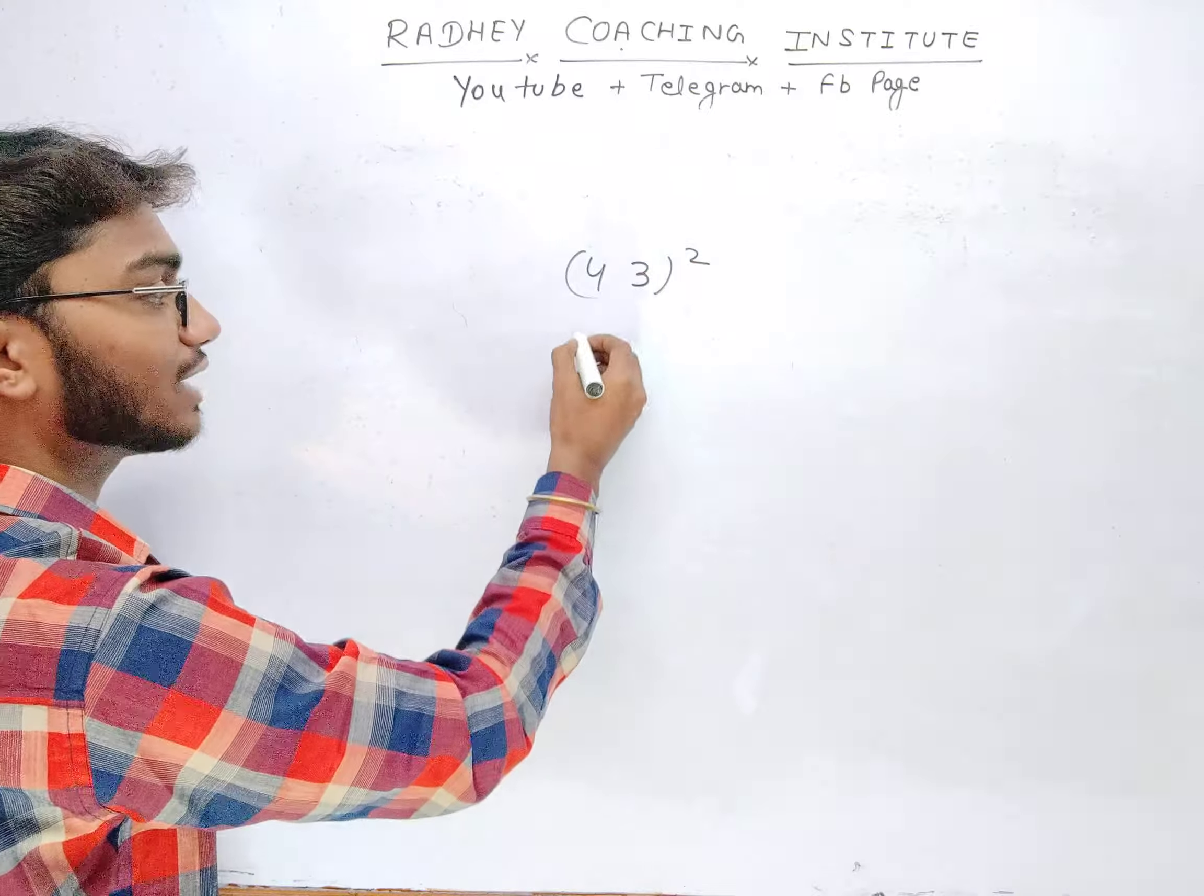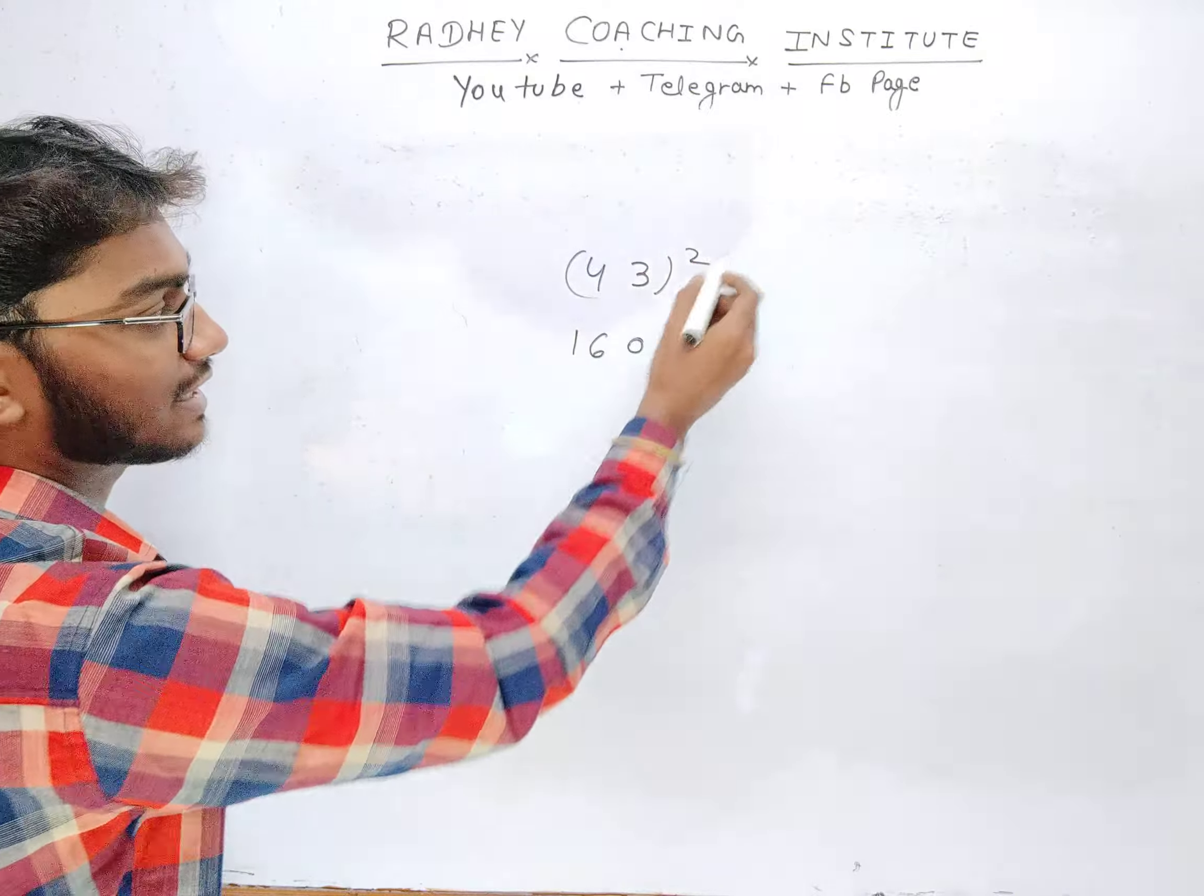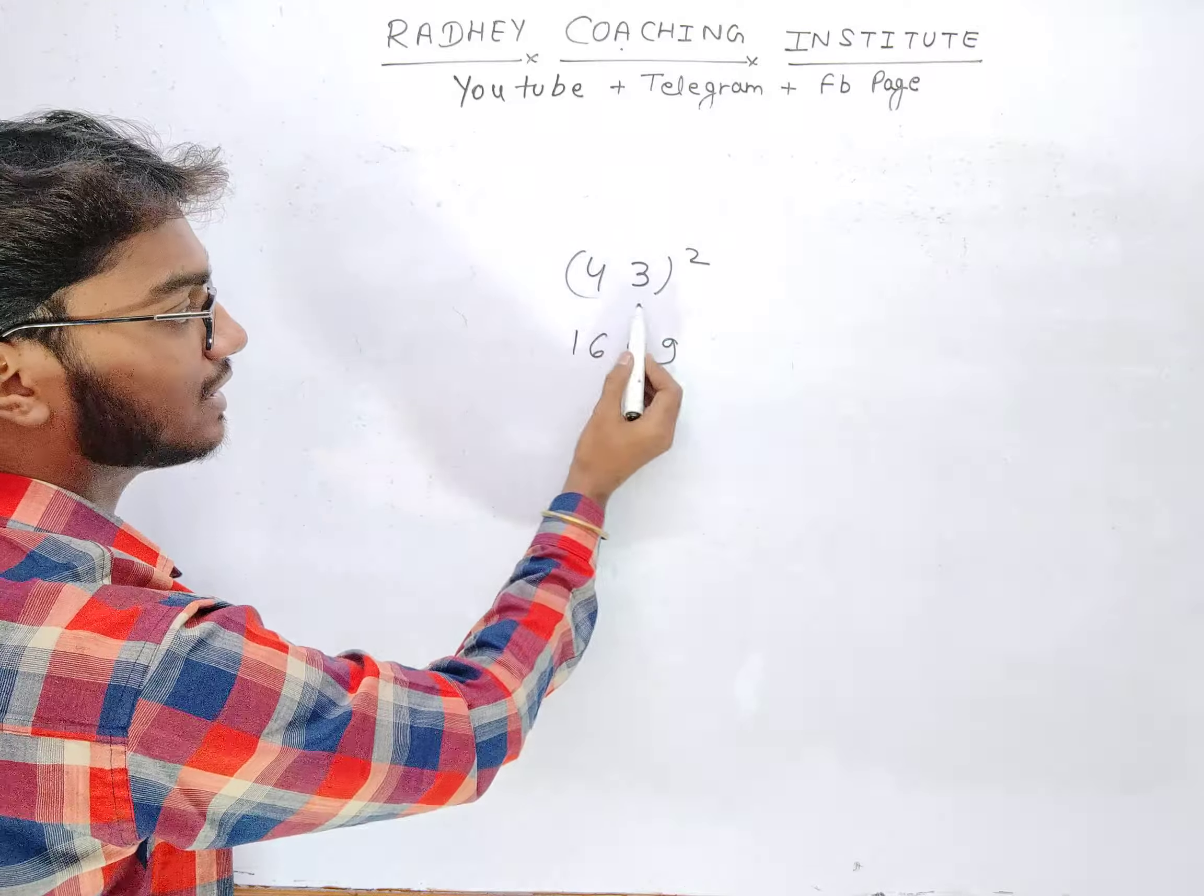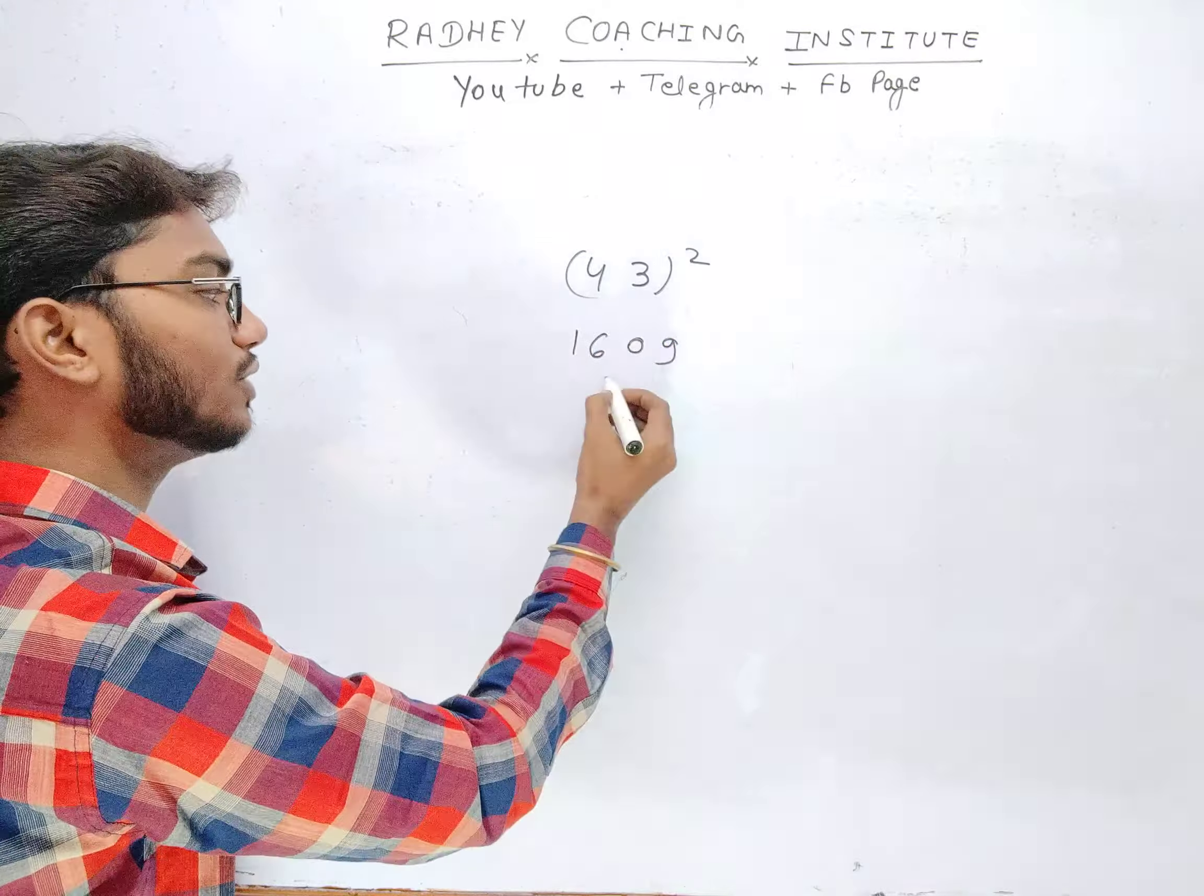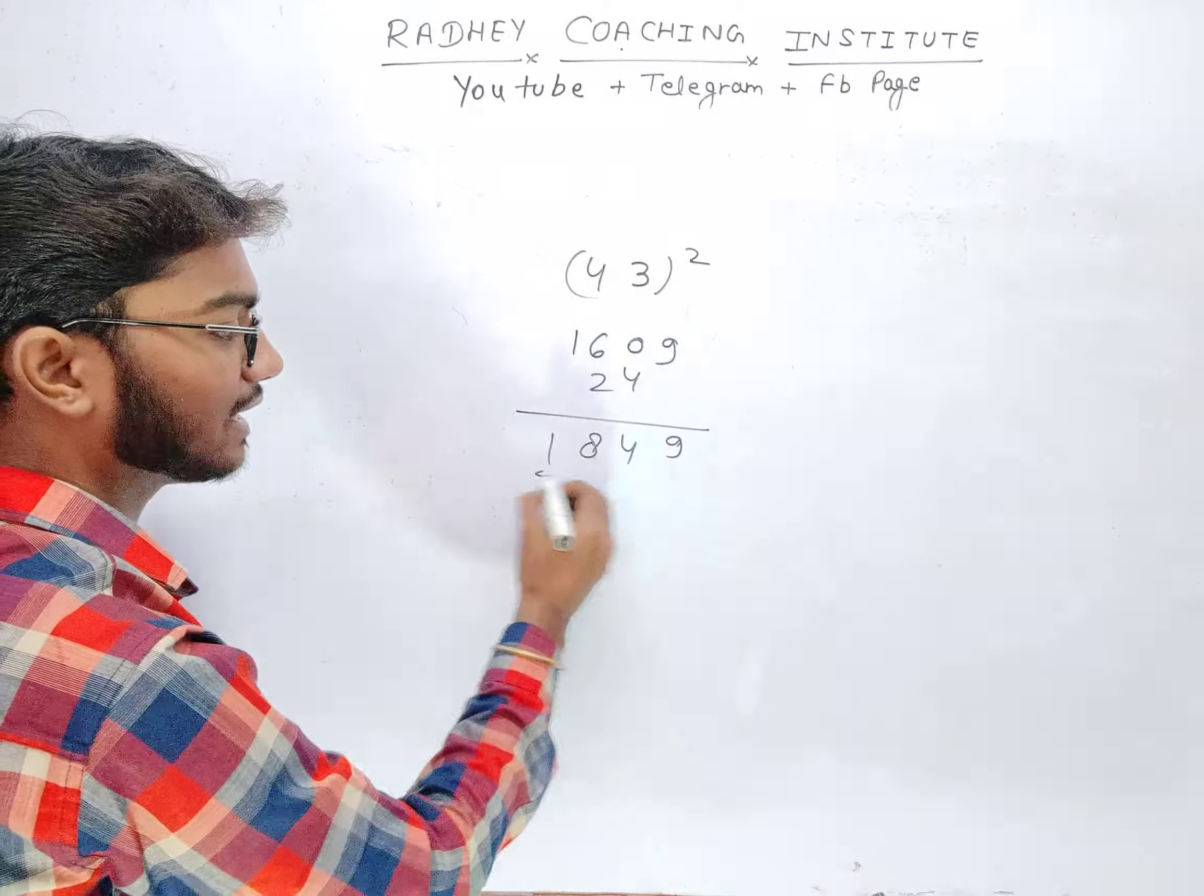Now to find the square: 4 squared is 16, 3 squared is 9. We will multiply 4, 3, 2. Now 4, 3 is 12, 12, 2 is 24. You take 1, 8, 4, 9. This is your answer.